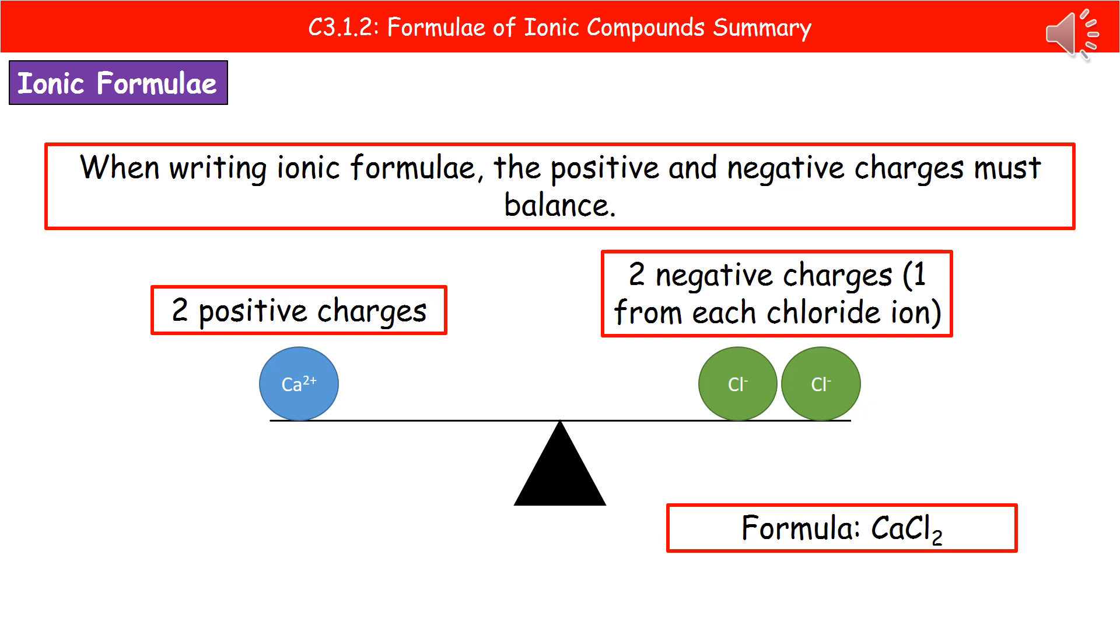When you've worked out how many of each ion you need to balance the charges, don't forget to include the subscript number to represent the number of those ions present. In this example, we've got one calcium and two chlorides, so the formula is Ca for one calcium and then Cl with the subscript two to represent the two chloride ions.